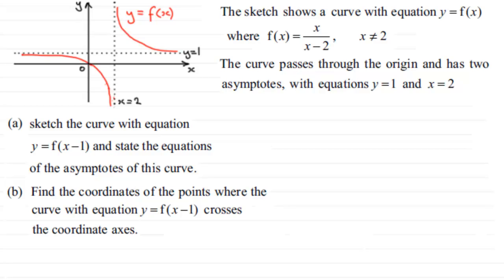You might like to read it through and pause the video at any of the questions and fast forward to find the worked solutions. What we've got here is a sketch showing a curve with equation y equals f of x where f of x equals x over x minus 2 and x cannot equal 2. The curve passes through the origin and has two asymptotes, y equals 1 and x equals 2.